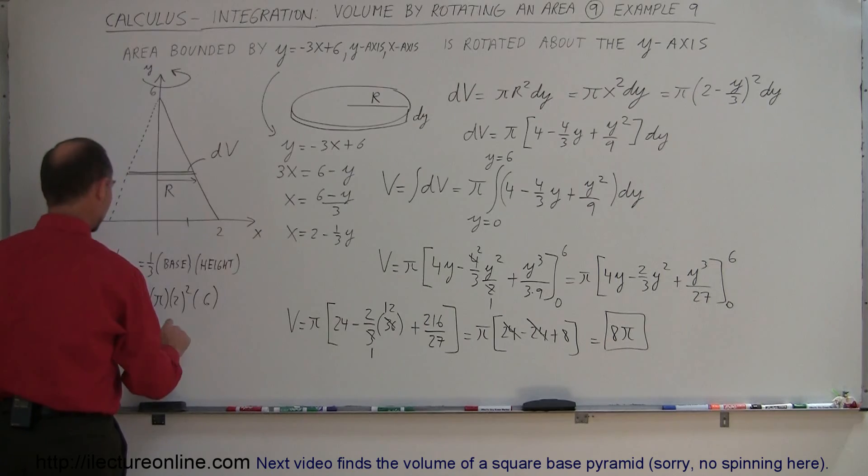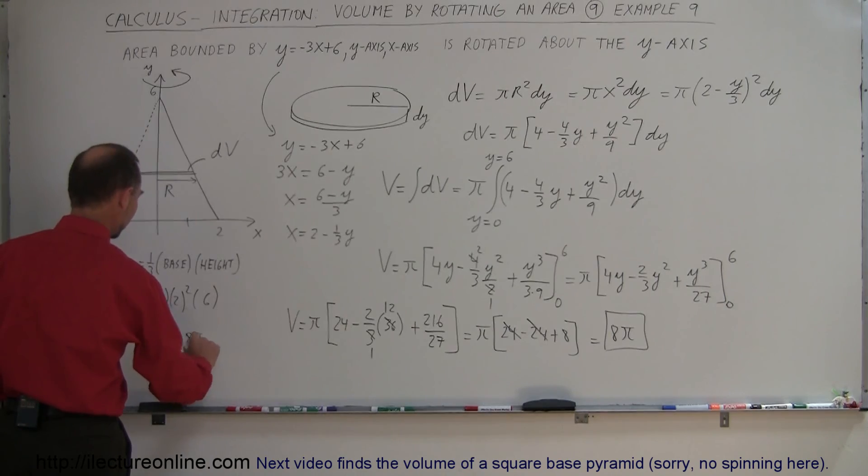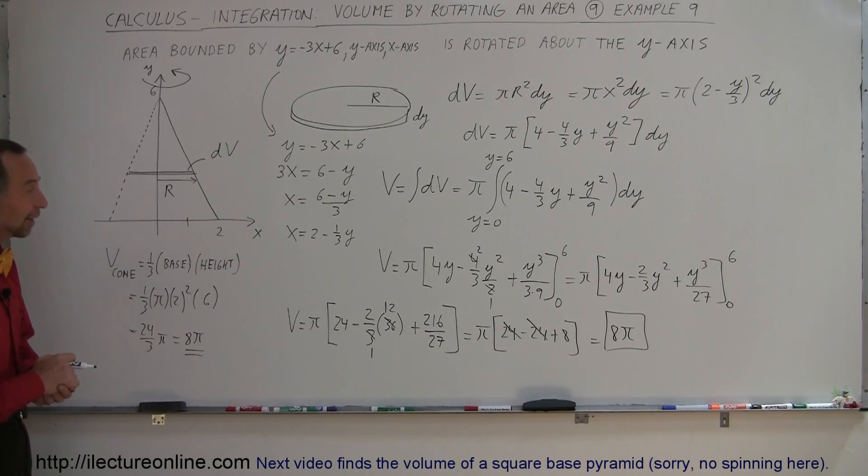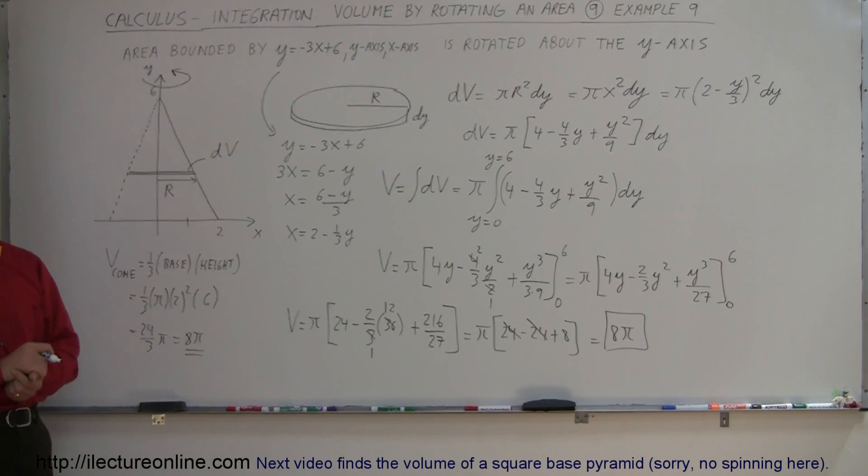And so this is equal to 4 times 6, which is 24, divided by 3 times π, which is 8π. And sure enough, we get the same answers we did over there. So, looks like we did everything correctly. And that's how we do that using calculus.